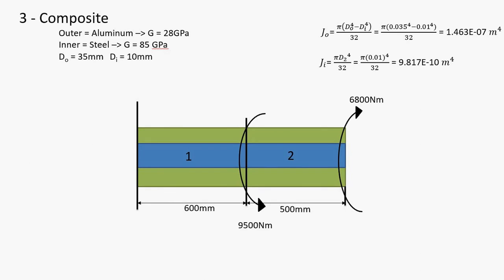The outer material is aluminum with a shear modulus of 28 gigapascals, and the inner material is steel with a shear modulus of 85 gigapascals. The outer diameter is 35 millimeters, the inner diameter is 10 millimeters, and the total length is 1.1 meters. At 0.6 meters from the left end there is a 9500 Newton-meter torque counterclockwise, and on the far end there is 6800 Newton-meters in the clockwise direction.